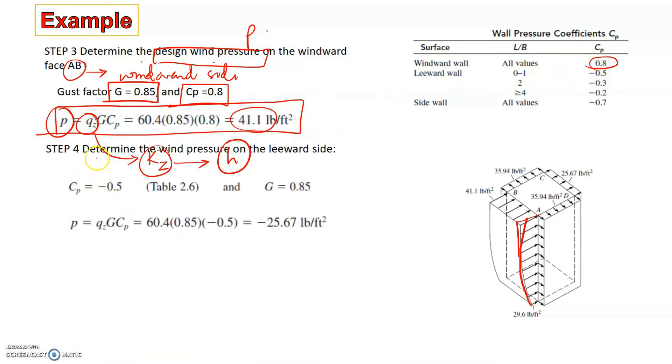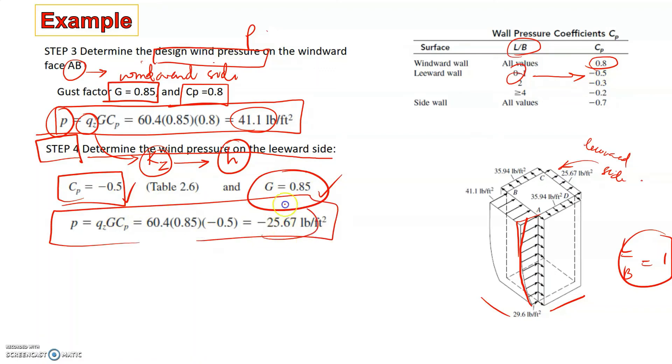The next thing is in the fourth step, we determine the wind pressure on the leeward side, which is this face, the leeward side. We see that this value Cp depends upon the ratio of L over B. You see that the sides are 60 and 60, therefore the L over B ratio is 1. So corresponding to 1, the value minus 0.5 is chosen here. G is 0.85. We substitute all of this, and we get a value of minus 25.67, which is constant with depth.